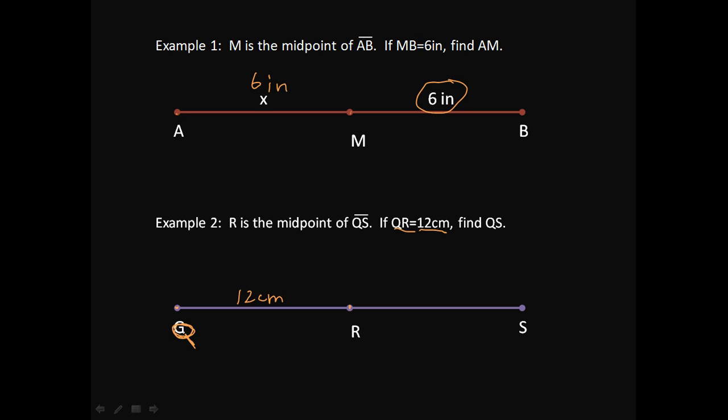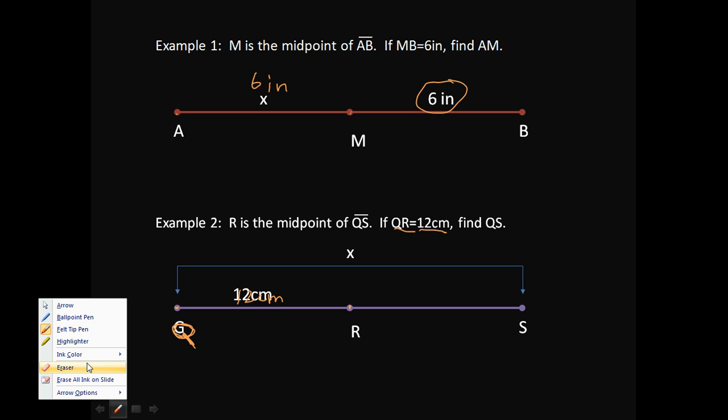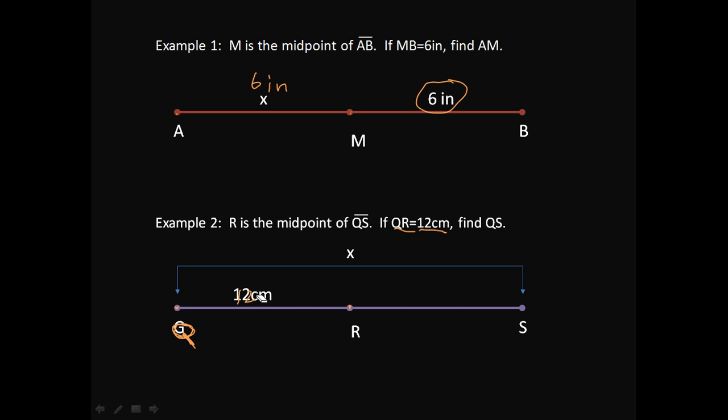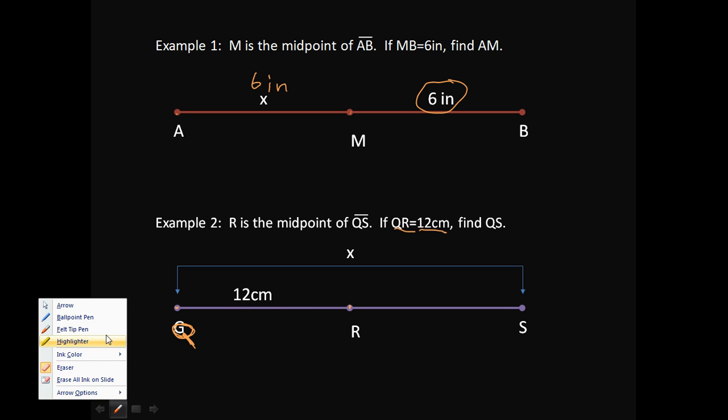So this is 12 centimeters from Q to R. Then we have to find out how far it is from Q to S. Well, most students might say, well, it's 12 centimeters. Well, that's RS. We know that RS is 12, but what we don't know is what QS is. So what we're looking for, if that's 12, I'm just trying to figure out what that is.